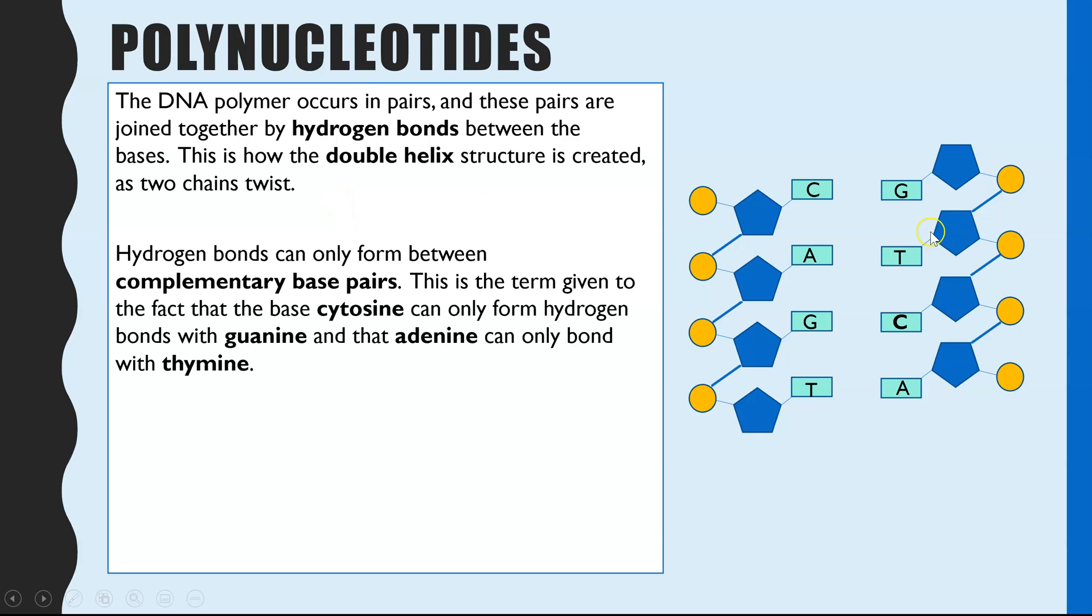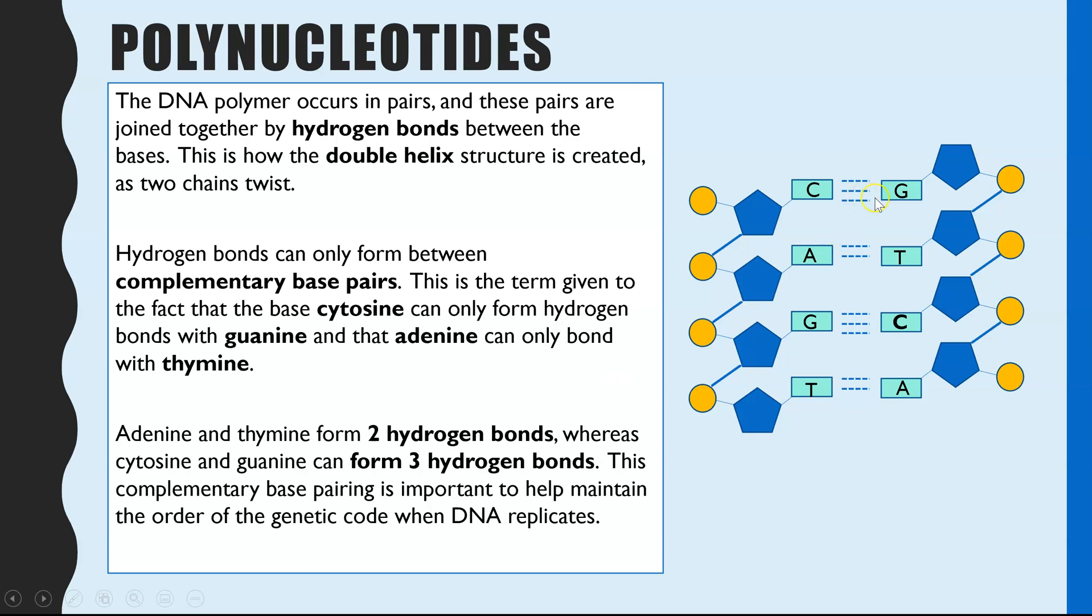So the first thing is we have complementary base pairs, and again you should be familiar with this from GCSE. So we can see that cytosine and guanine are complementary base pairs, and adenine and thymine are complementary base pairs. So those two bases and these two bases are able to align opposite, and then hydrogen bonds can form between these bases, and that's what holds together the structure. And we can see just a little bit of extra detail here: guanine and cytosine can actually form three hydrogen bonds because of the molecular structure of cytosine and guanine. Adenine and thymine can form two hydrogen bonds.